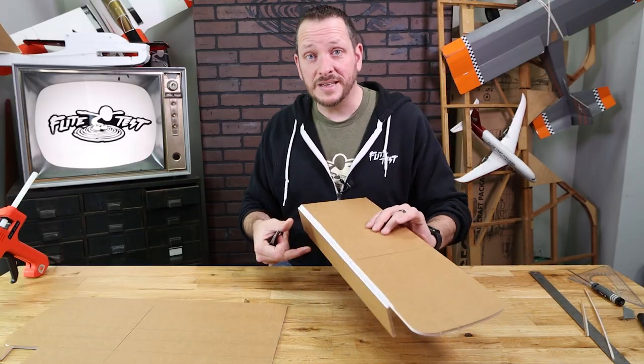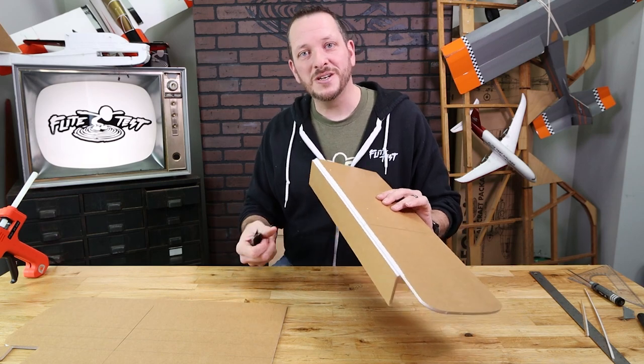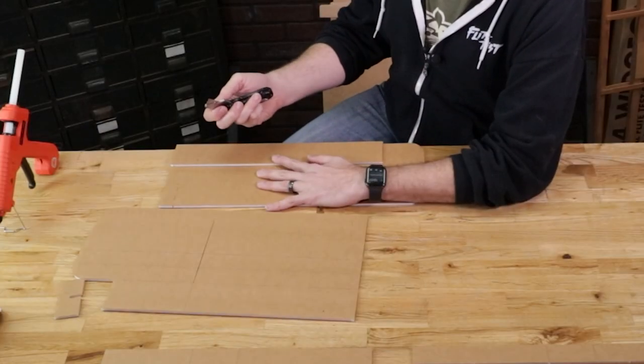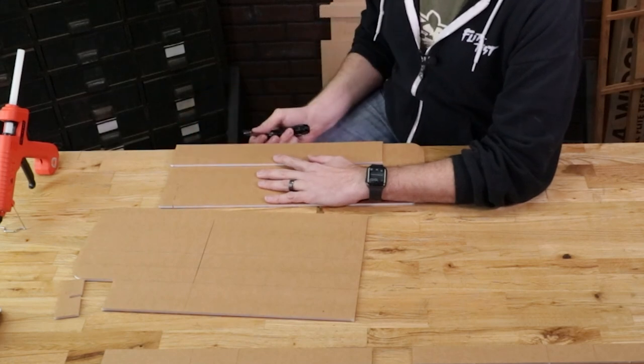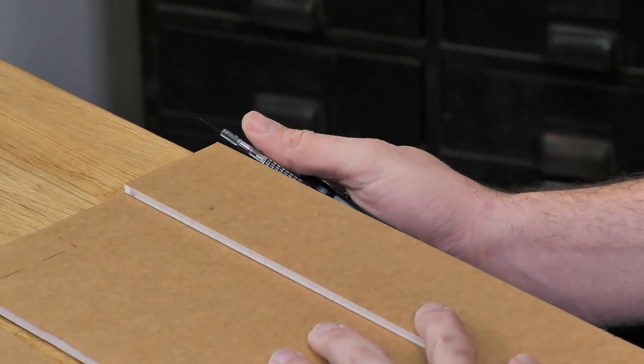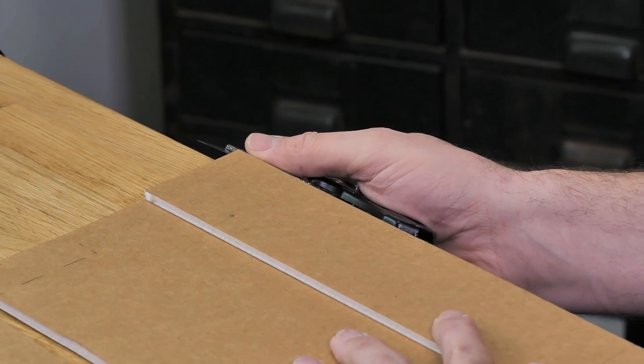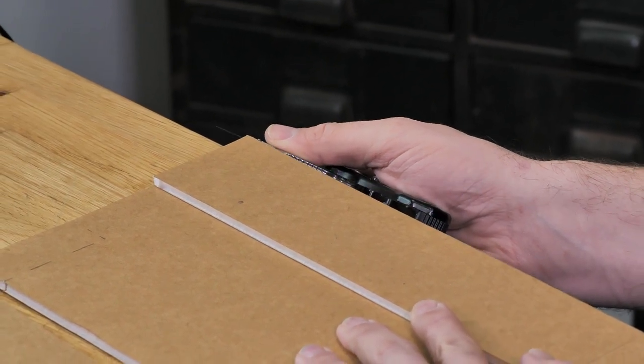There we go. Now, if your razor blade ever gets dull and it starts tearing the paper, make sure you replace that. An alternative method is you can place your wing panel down against the table, leaving the area where you're going to bevel cut, and then you can ride your hand and the razor blade up against the table as you pull.